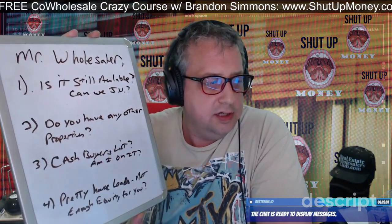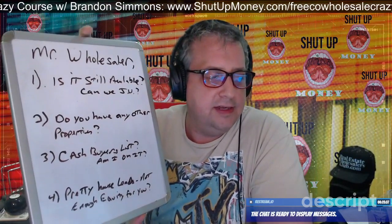Number one: is it still available — can we JV? Number two: do you have any other properties? Number three: cash buyers list — am I on it? Number four: do you have any pretty house leads that did not have enough equity for the ugly house business? Because I'm a pretty house guy — I really, really love the pretty house stuff.